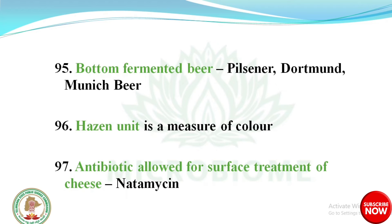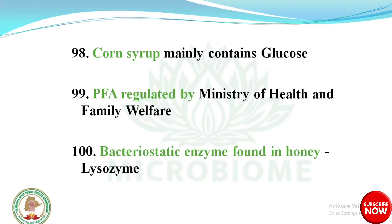An EBC unit is a measure of color (for beer). The antibiotic allowed for surface treatment of cheese is natamycin. Corn syrup mainly contains glucose. PFA is regulated by the Ministry of Health and Family Welfare. The bacteriostatic enzyme found in honey is lysozyme.